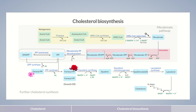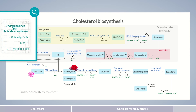If you consider the total synthesis of cholesterol, you'll notice that a considerable amount of energy-rich compounds are required. Altogether, there are 18 acetyl-CoA, 18 ATP, and 14 NADPH and H+ per molecule of cholesterol.